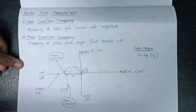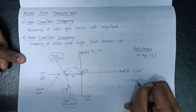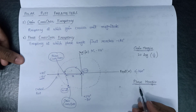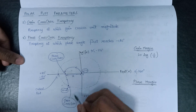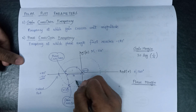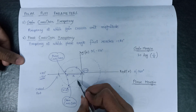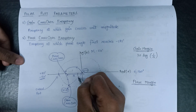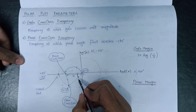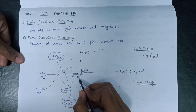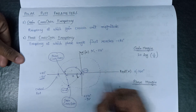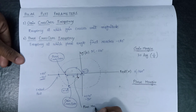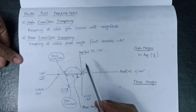Here is another important term, that is phase margin. To determine the phase margin, we have to draw a line from the gain crossover frequency towards the origin. We then measure the angle in the anti-clockwise direction. The angle in the anti-clockwise direction is the phase margin. So these are the four important parameters associated with the polar plot.